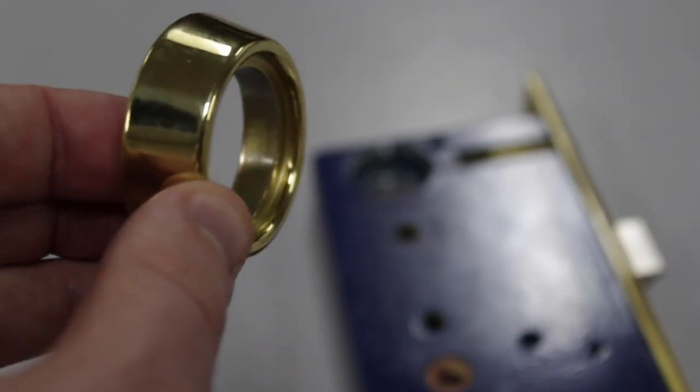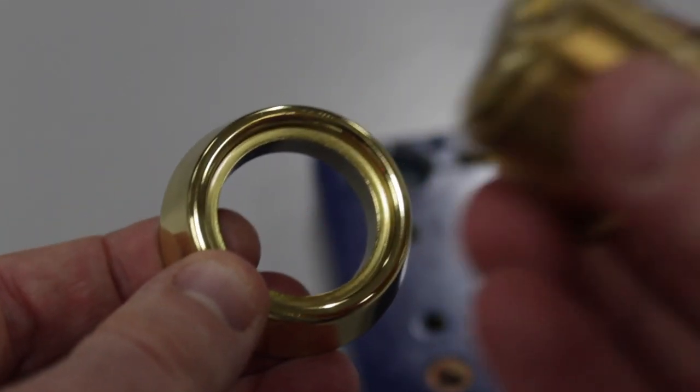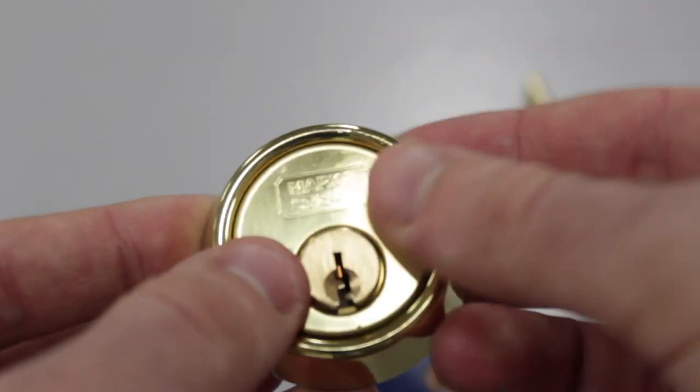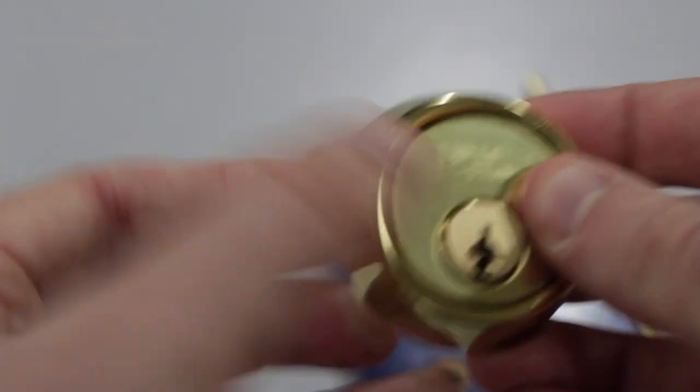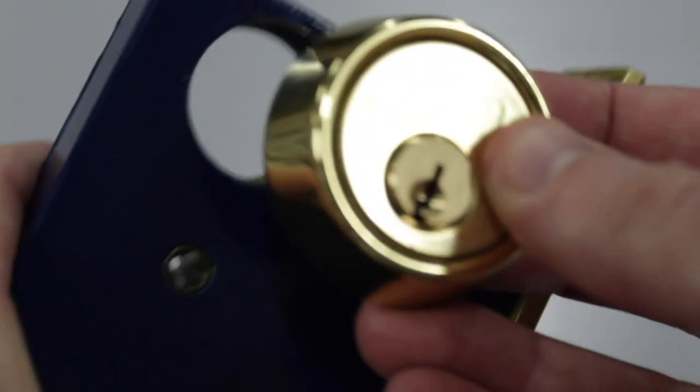Installing it with the trim ring is the same process. Insert the cylinder into the ring and then thread it into the lock set.